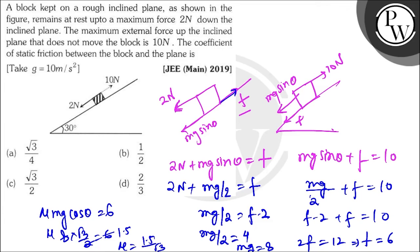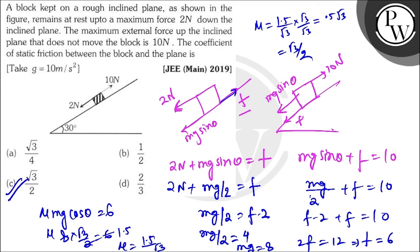So 2N + mg/2 = f and mg/2 + f = 10. Substituting: f − 2 + f = 10, so 2f = 12, f = 6. Then mg = 8. So μ × mg cos 30° = 6: μ × 8 × (√3/2) = 6, giving μ = 1.5/√3. Multiplying numerator and denominator by √3: μ = 0.5√3, which can also be written as √3/2.